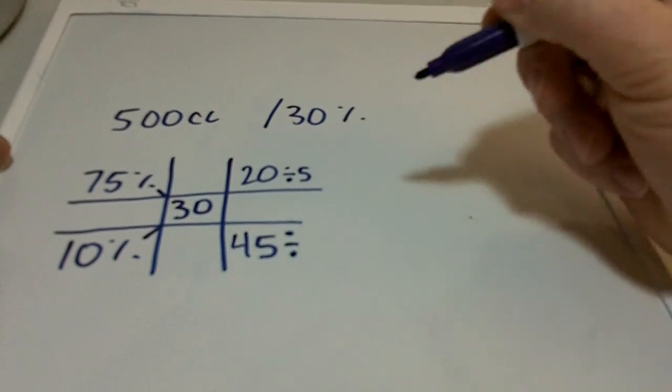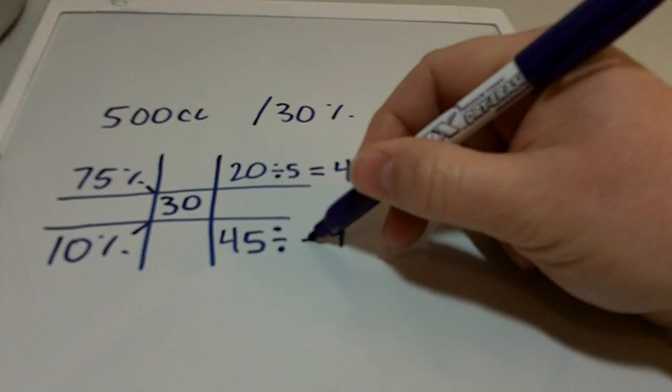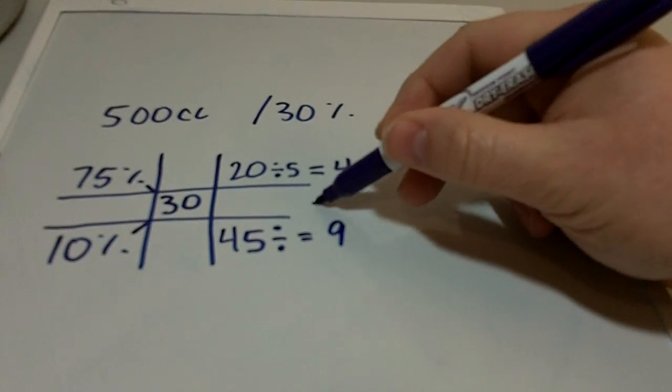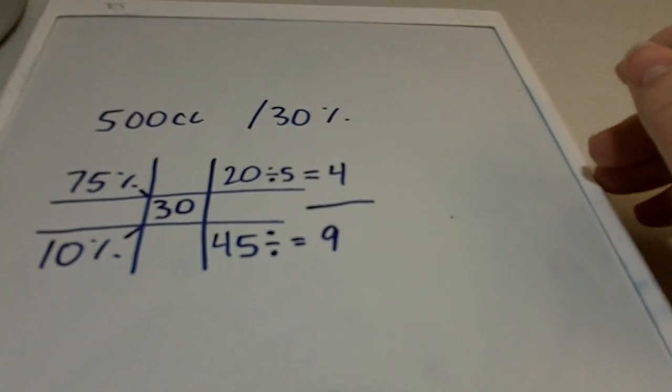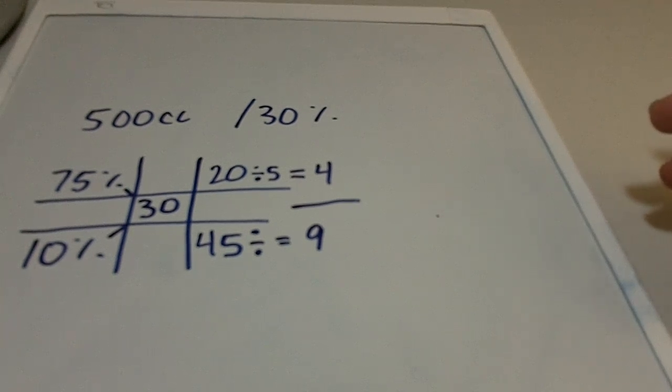If I divide them by 5, I get 4 and 9. What that does is it gives us a little bit easier amount of numbers to work with, and also it doesn't change the ratio.